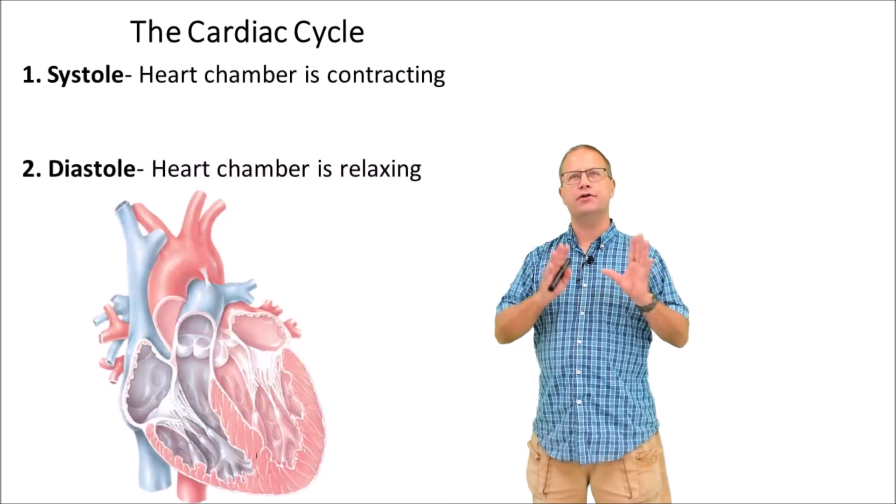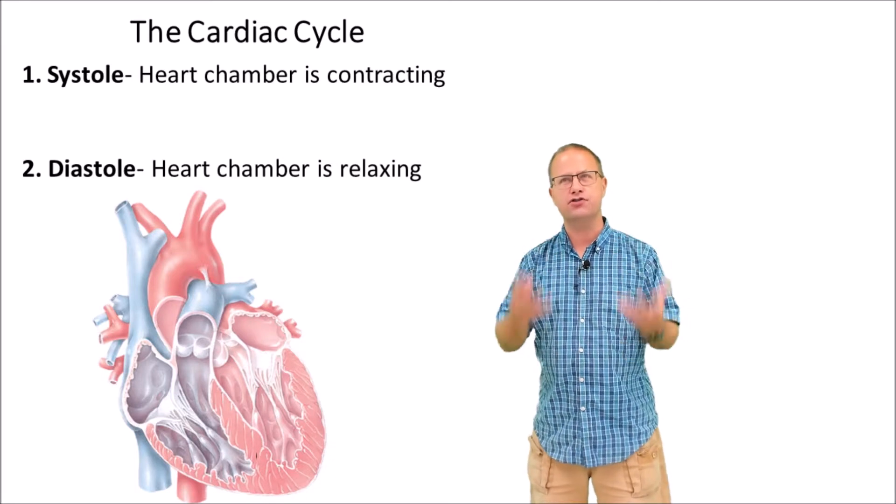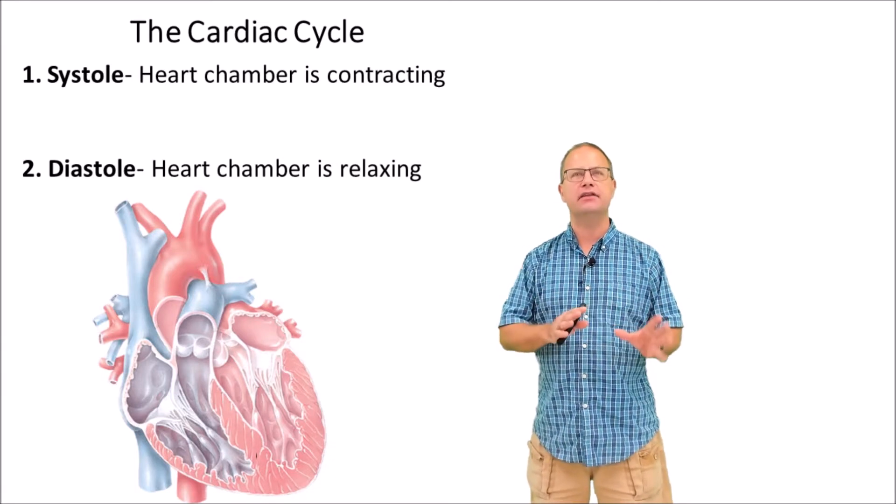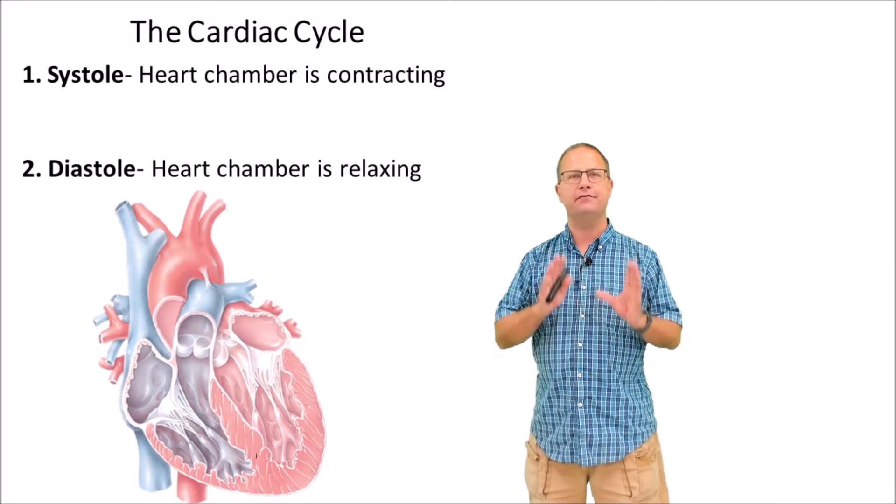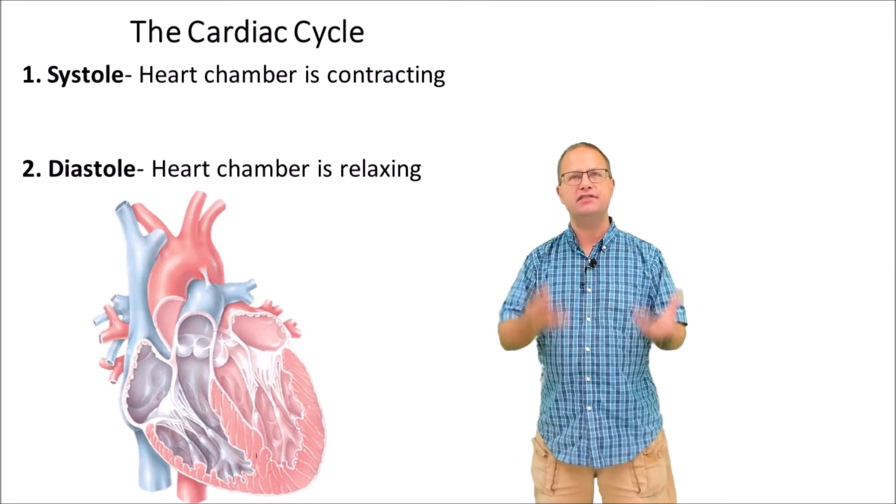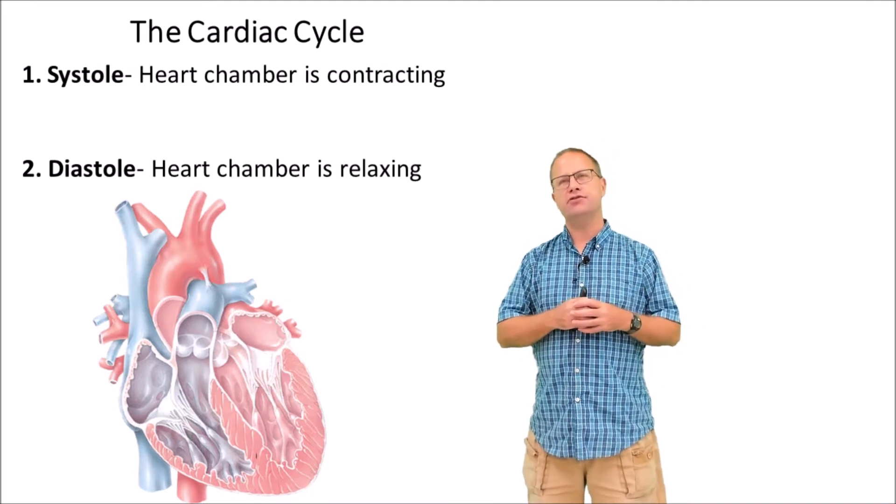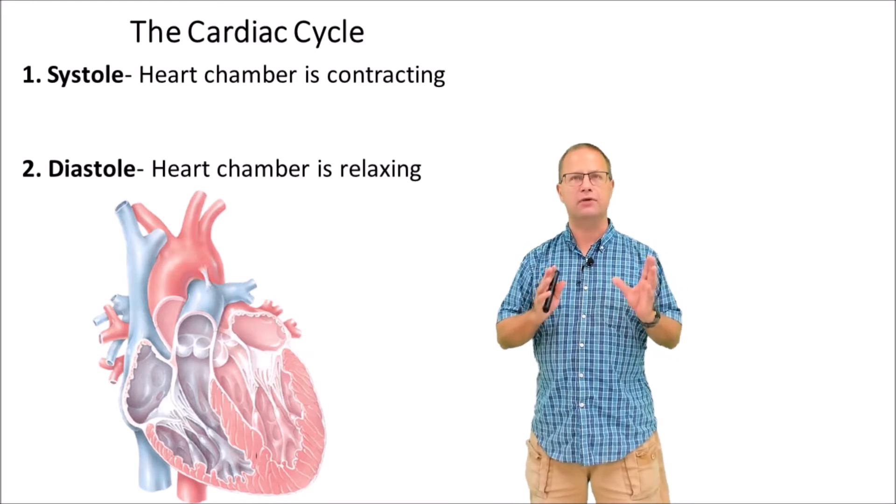Just to summarize, there are two different phases. Systole is when the ventricles are contracting and diastole is when the ventricles are relaxing and filling with blood. There are different pressures associated with this. The systolic pressure is the pressure when ventricles are contracting and the diastolic pressure is the pressure when the ventricles are relaxing.